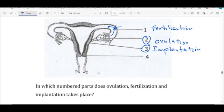Ovulation is the first stage that will take place in the part labeled 2. Then from there, we are going to have fertilization that will take place in the part labeled 1. Then we are going to have implantation, which will take place in the part labeled 3, which are the walls of the uterus.